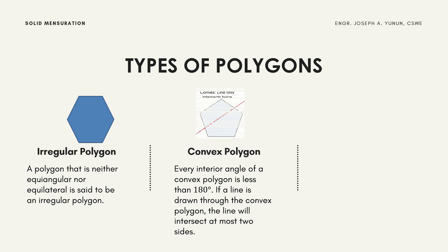A convex polygon is one where every interior angle is less than 180 degrees. As shown in the given figure of a pentagon, all interior angles are less than 180 degrees. If a line is drawn through the convex polygon, the line will intersect at most two sides — whether it is a diagonal, horizontal, or vertical line.